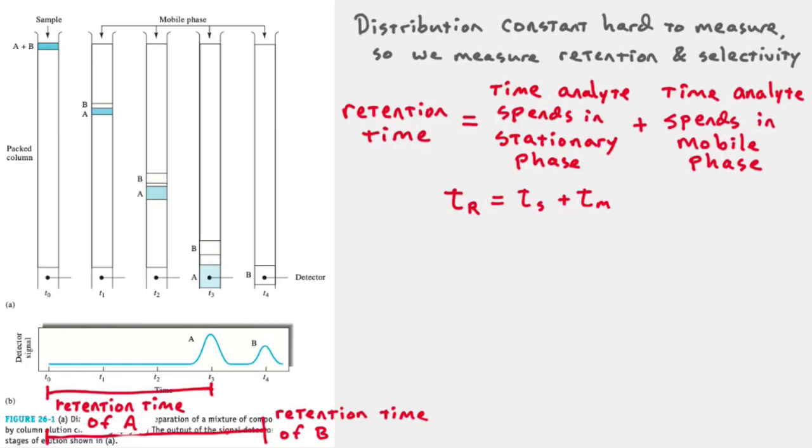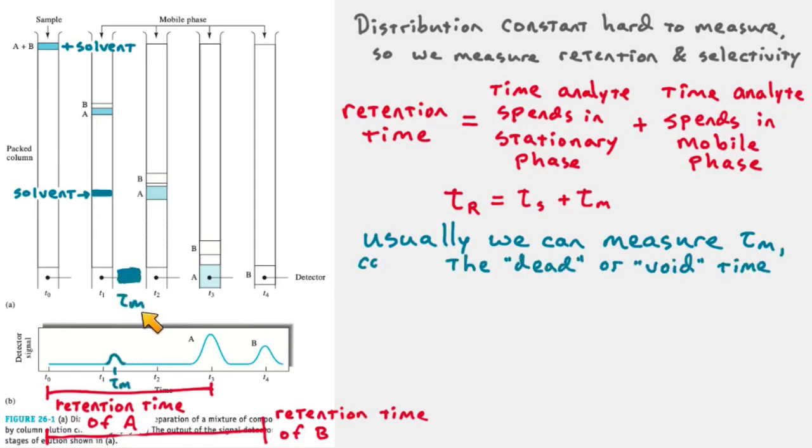Now it's also fairly easy to measure TM, the time that an analyte spends in the mobile phase, because that's really constant for all the compounds. The time in the mobile phase depends on just how long it takes the liquid to go through the column. So we can usually measure this too. The way we do that is we go back up to our diagram and realize that there's also solvent that we put in with A and B. That solvent will travel down the column at the rate of speed as the mobile phase, because usually you try to match the solvent to what your mobile phase is, either closely or exactly.